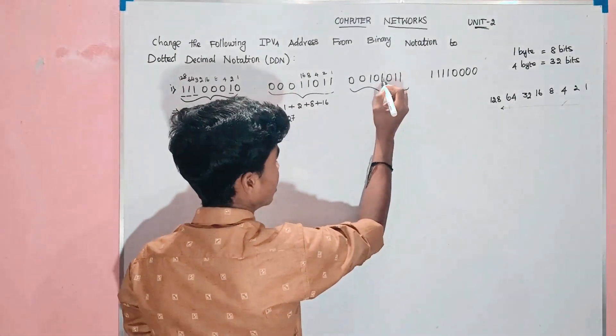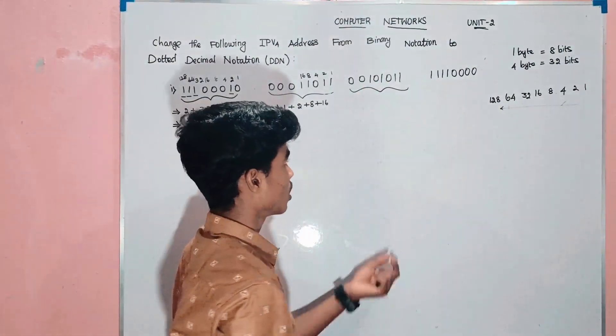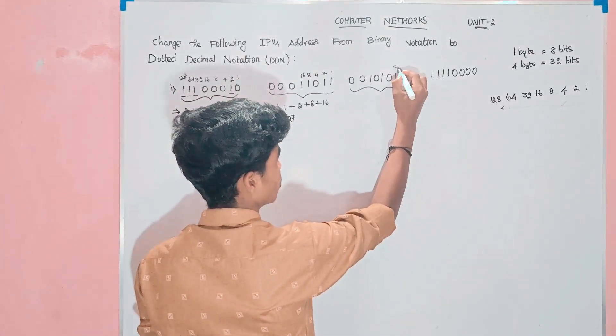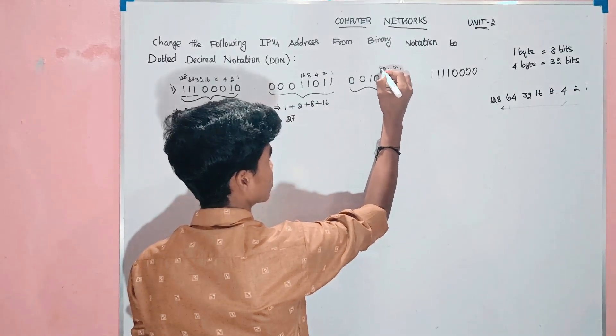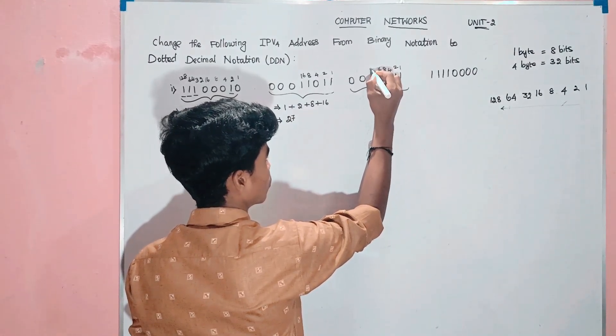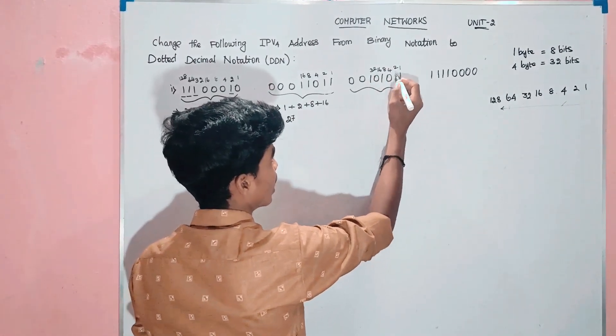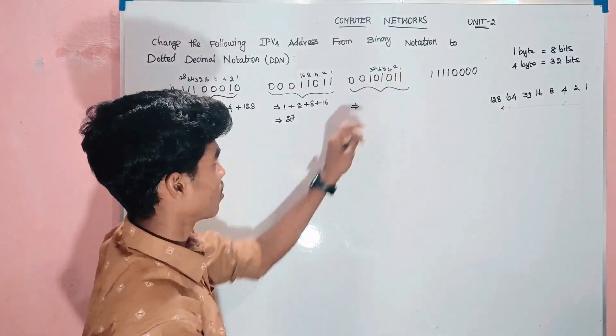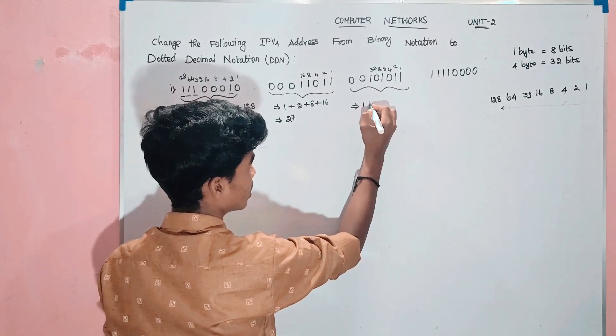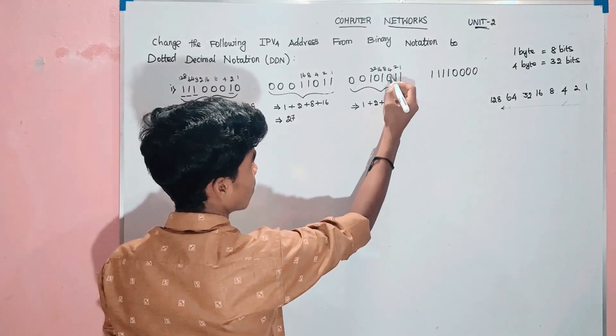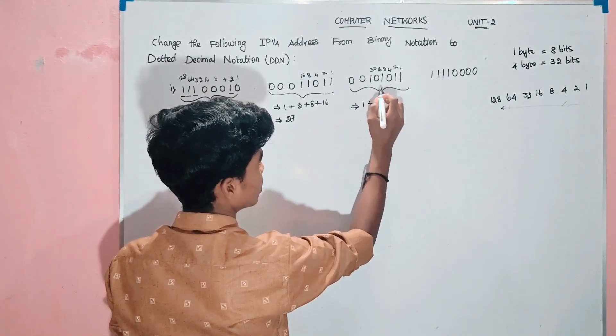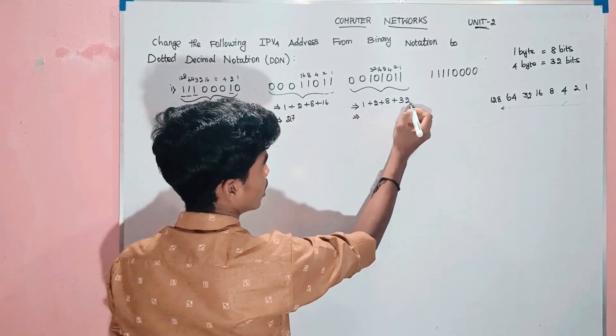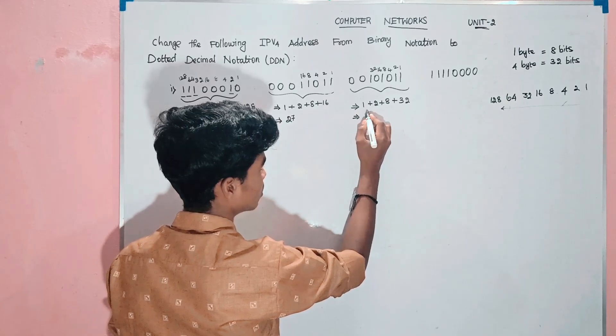So third we can add one number, value assignment. So 1, 2, 4, 8, 32. So 1, 2, 8, 32. So 32 plus 8, 40, 40 plus 3, 43.